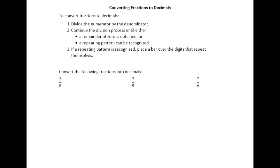In this lesson we're going to talk about converting fractions into decimals. To do this, first take the numerator divided by the denominator. We're going to continue this process until one of two things happen: either you get a remainder of zero, or you recognize a repeating pattern. If you recognize a repeating pattern, place a bar over the digits that repeat themselves.